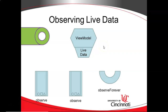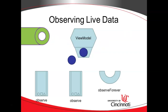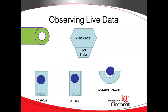Let's consume our first piece of data. The data comes to the view model and the live data, and then anything that is observing on this live data will receive that data that the view model received. At this moment, everything that we see here is observing on this live data.